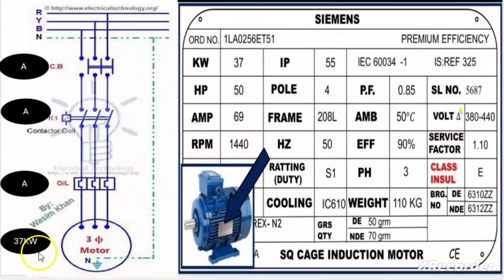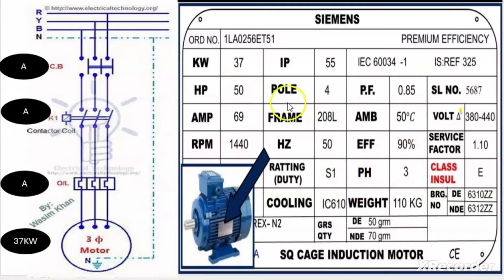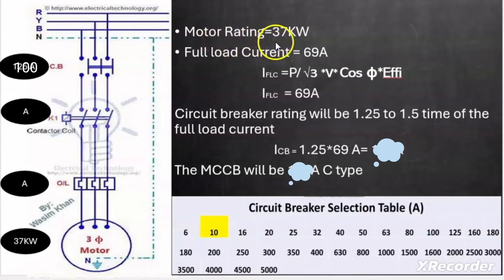I took an example where the motor rating is 37 kilowatt. Here is the nameplate of this motor: the rating is 37 kW or 50 HP, the full load current is 69 ampere, the power factor is 0.85, the efficiency is 90%, and it is a 3-phase motor. These details are important to understand the calculations. We need to calculate the ratings for the circuit breaker, contactor, and overload relay.